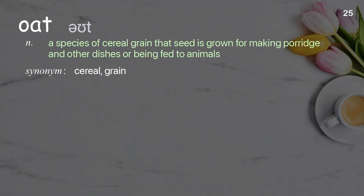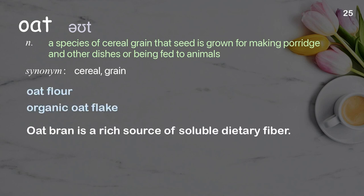Oat: A species of cereal grain whose seed is grown for making porridge and other dishes or being fed to animals. Examples: Oat flour, Organic oat flake. Oat bran is a rich source of soluble dietary fiber.